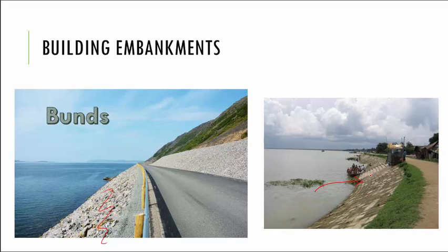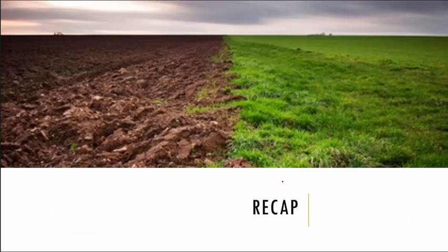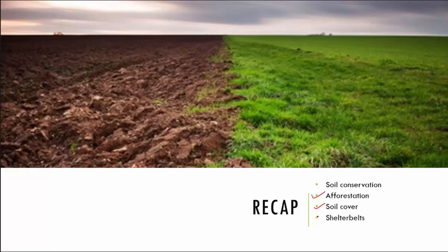With this we come to the end of the chapter. Let's do a quick recap of what we did in part two. Under part two we saw soil conservation through: afforestation, soil cover, shelter belts, step farming, and how we could build embankments to protect our land from soil erosion due to water or floods.